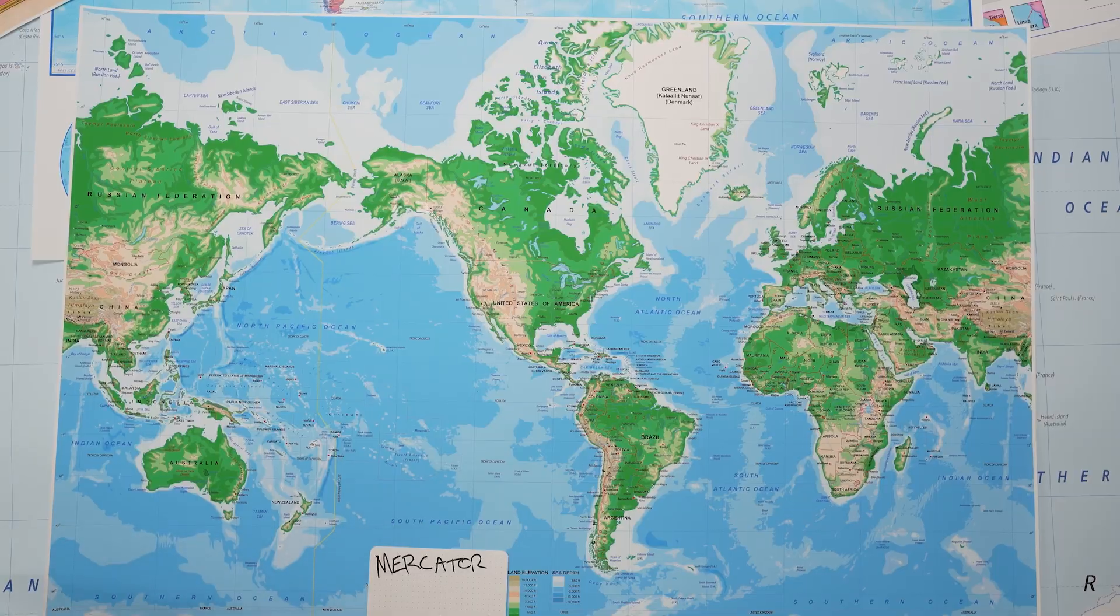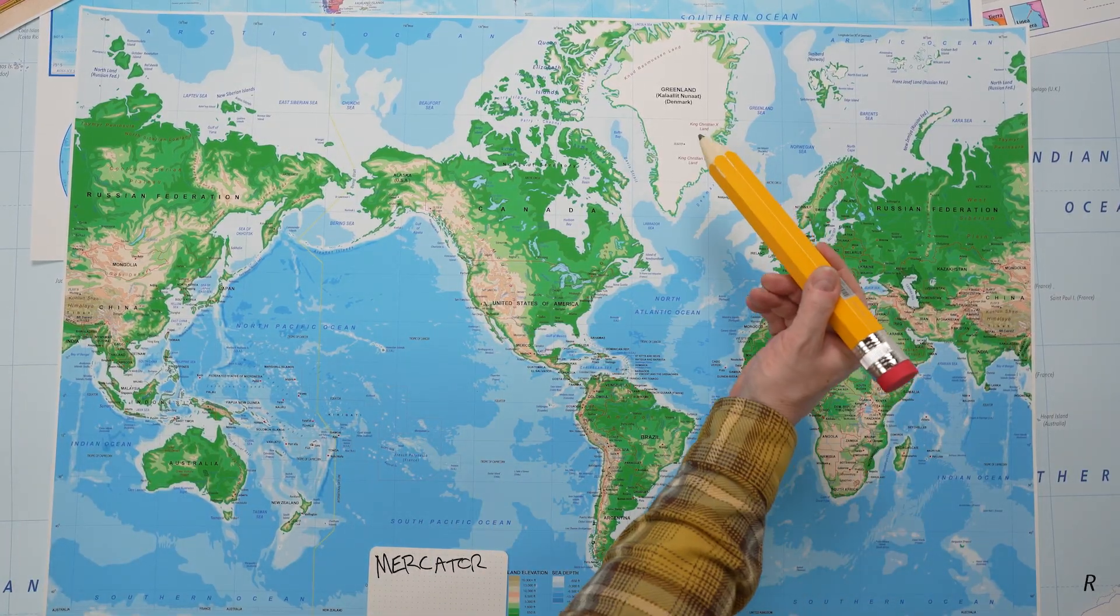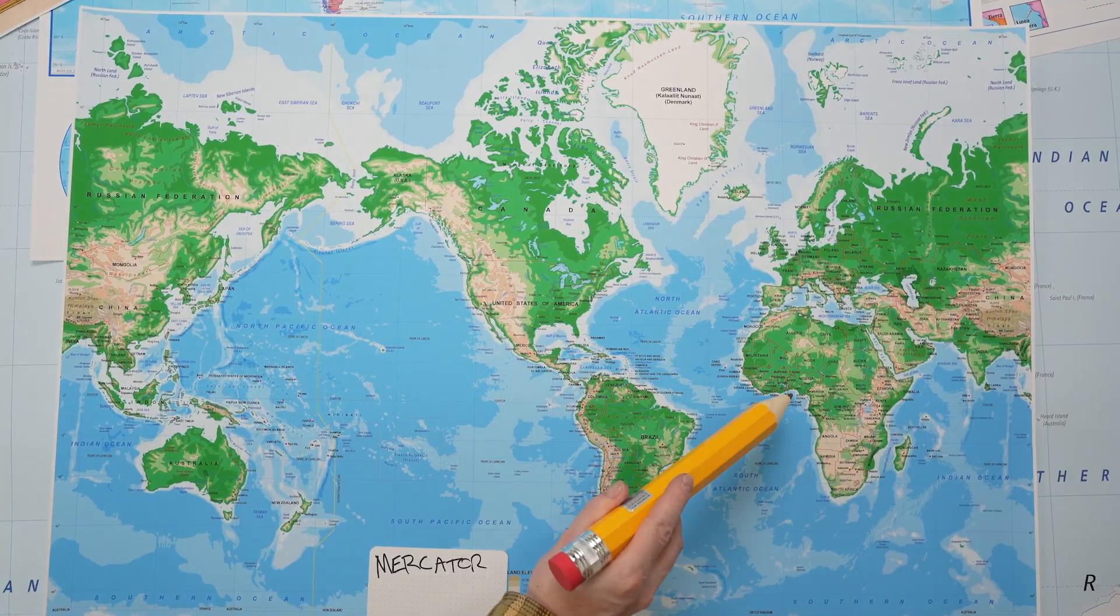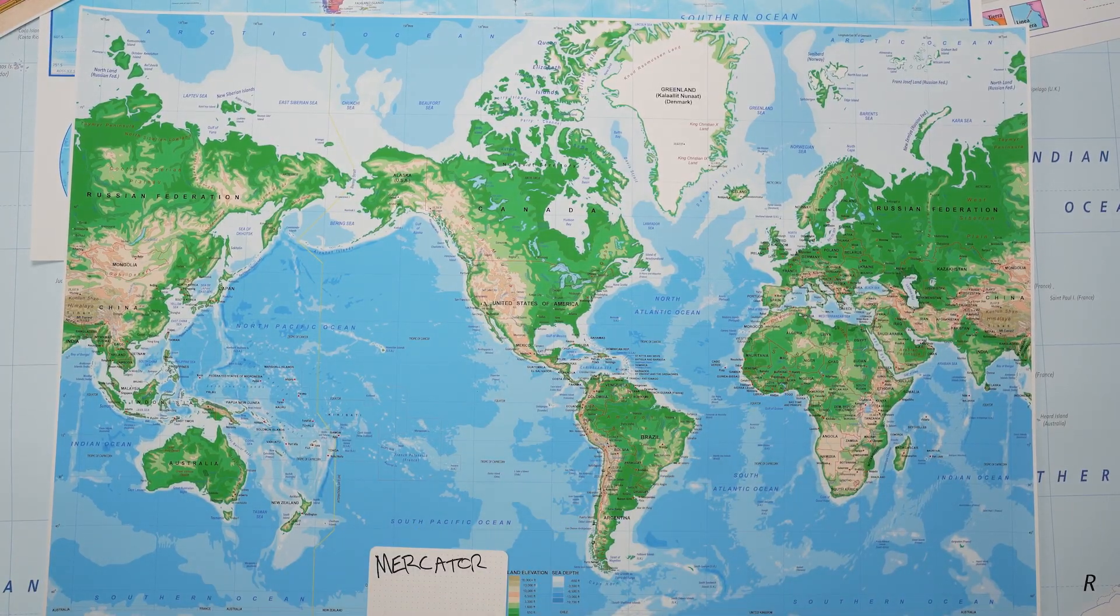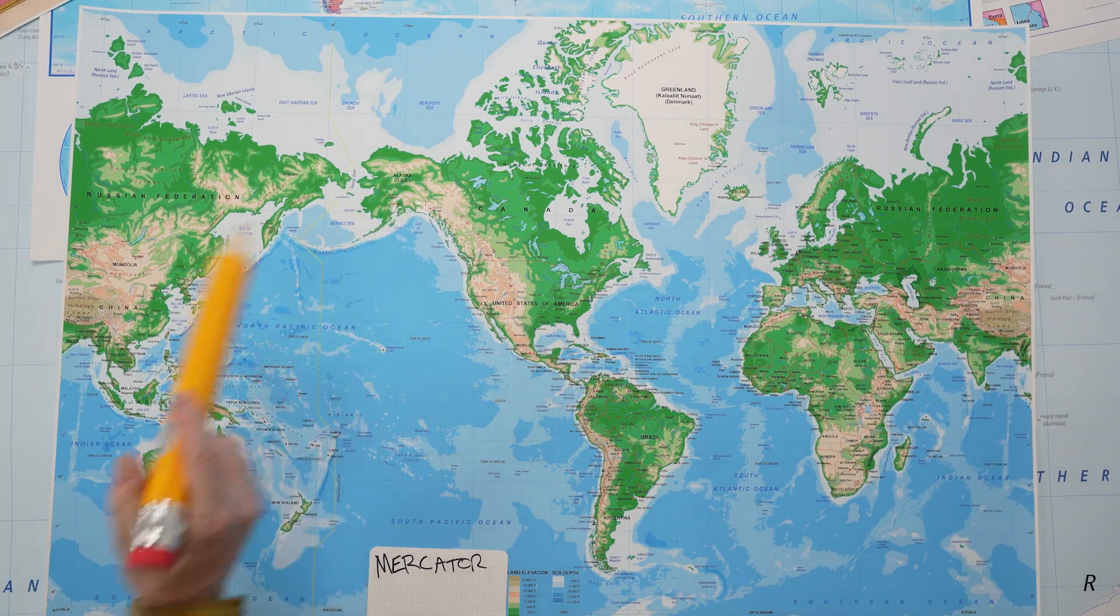The trade-off. To make that map work, you have to stretch land masses the further you get from the equator. The poles get absolutely massive on the map, even though they're tiny in reality. Countries near the equator stay relatively accurate, but the further north or south you go, the more distorted everything becomes.